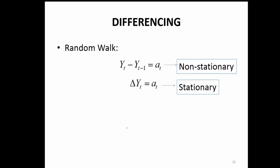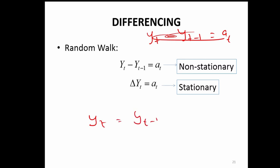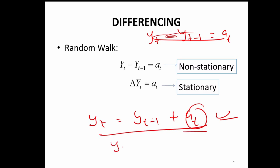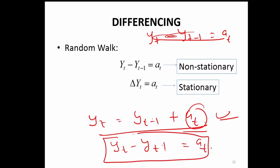Here is the case of differencing and how you make something stationary. If you take a random walk — yt equal to yt-1 plus the error term — yt will be non-stationary. This is a typical non-stationary case. But if you take a difference of that, if you take the first difference, it is likely to be stationary.